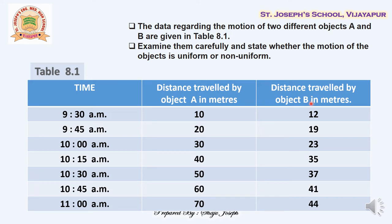During the first instance at 9:30 a.m., object A has covered 10 meters and object B has covered 12 meters. We cannot say anything definitive yet because we need more data. Let us look at the next row: at 9:45 a.m., we have spent 15 minutes.